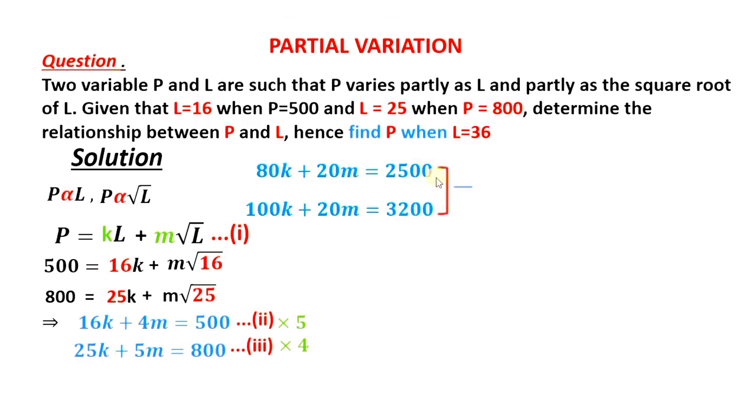Now subtracting, we will have 80K minus 100K, that should give us negative 20K, and 2500 minus 3200, that should give us negative 700. Dividing both sides by negative 20, we will have K as 35.